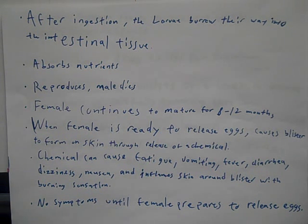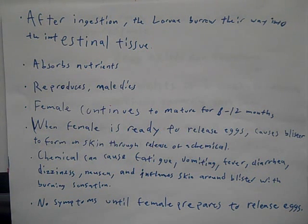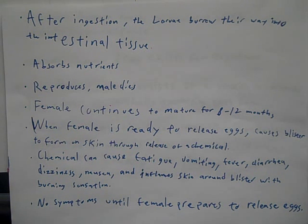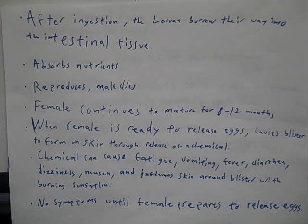When the female is ready to release eggs, she causes a blister to form on the skin by releasing a certain chemical. This chemical can cause symptoms such as fatigue, vomiting, fever, diarrhea, dizziness, and nausea, and it also inflames the skin around the blister with a burning sensation. This burning sensation causes the host human to put the afflicted area into a nearby water source, at which time the female is able to release the mature eggs she has developed. Notably, no symptoms are present until the female is ready to release her eggs.